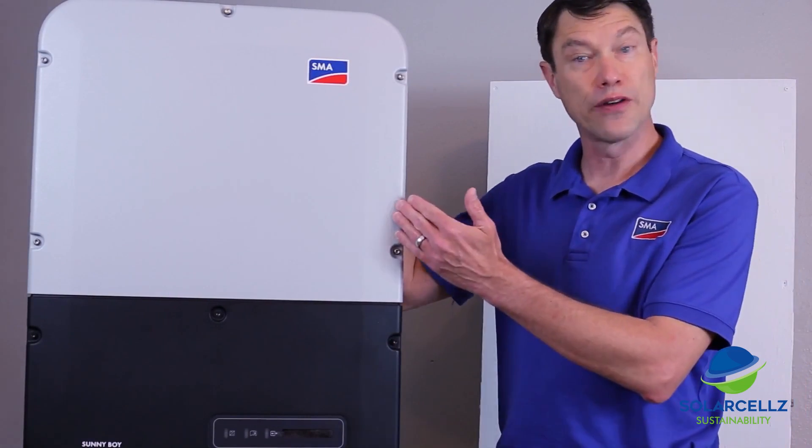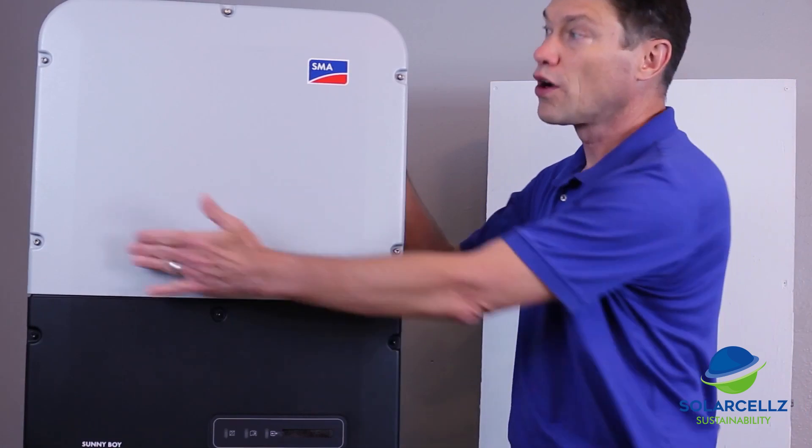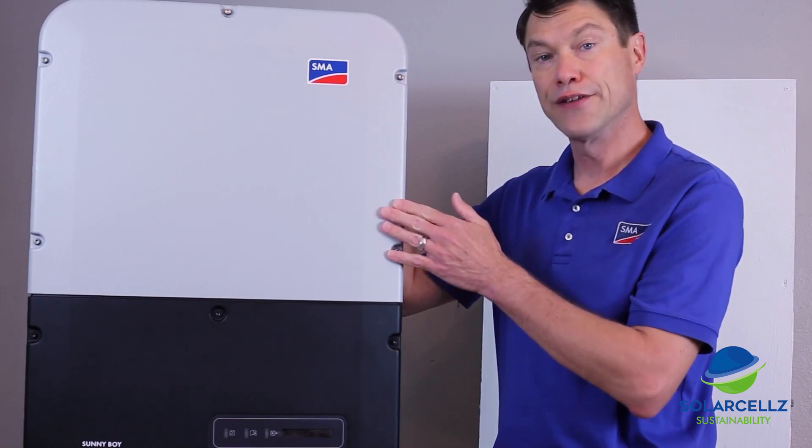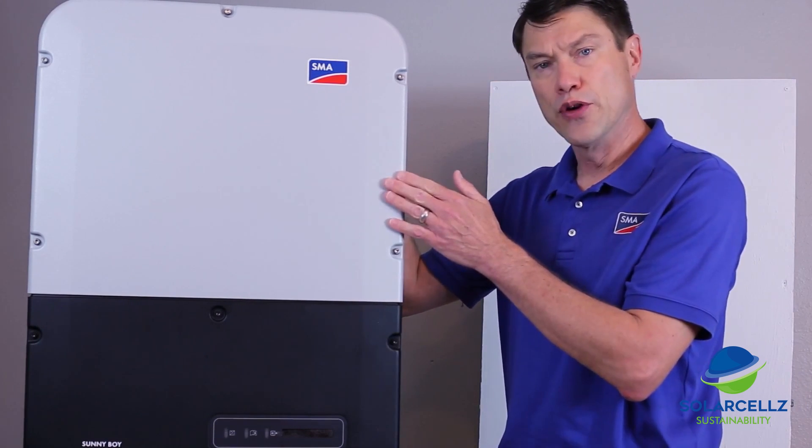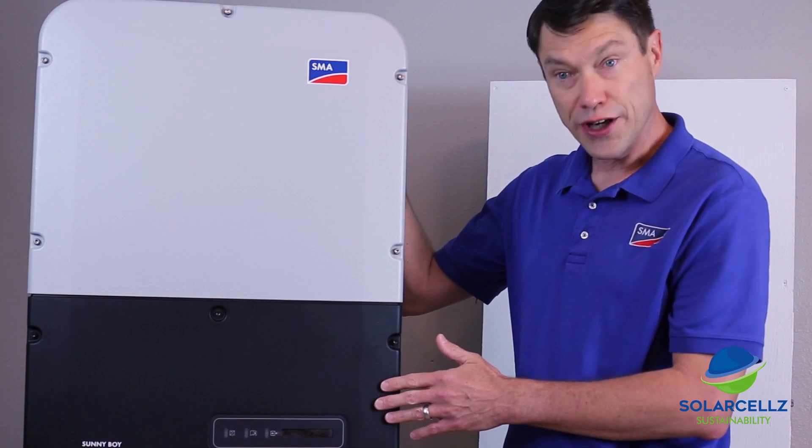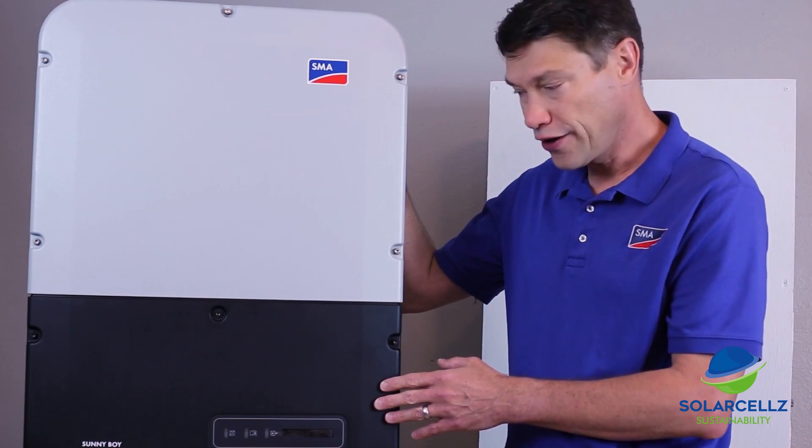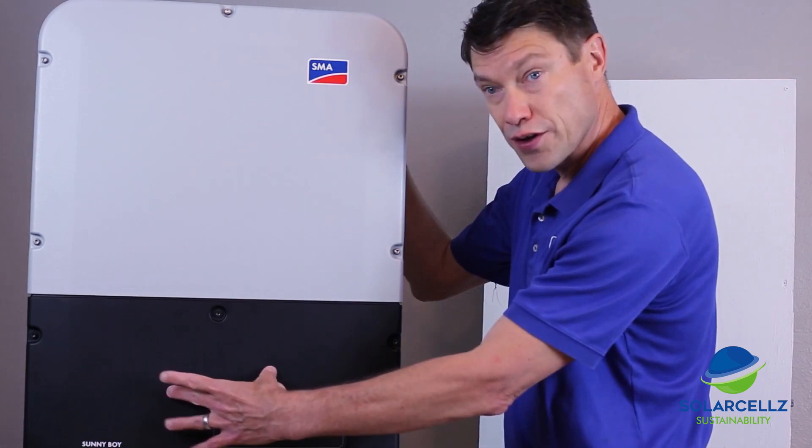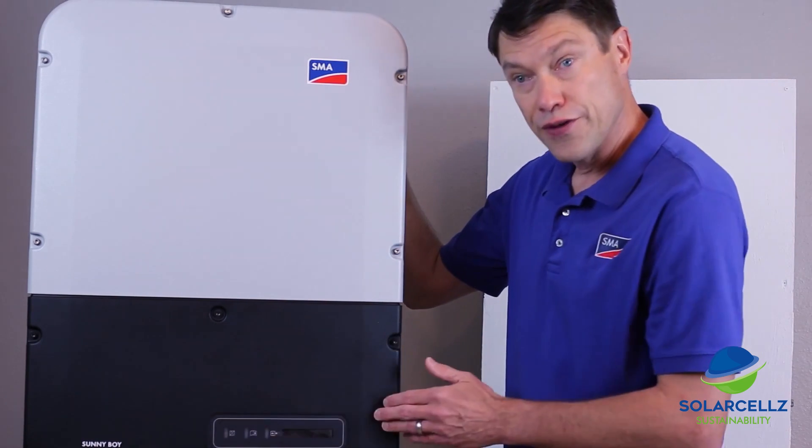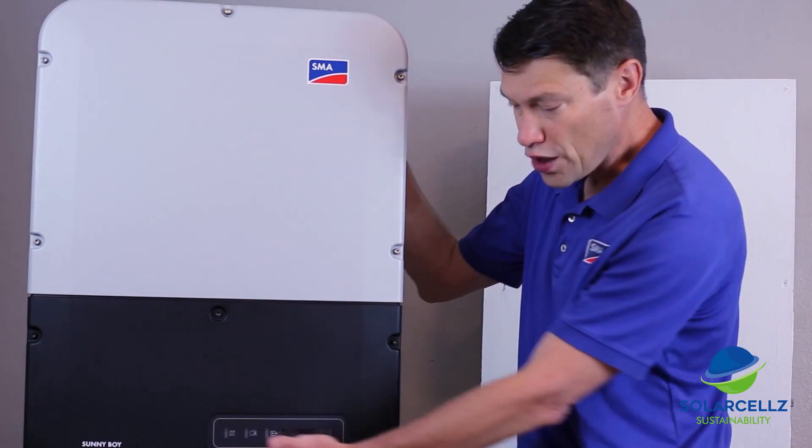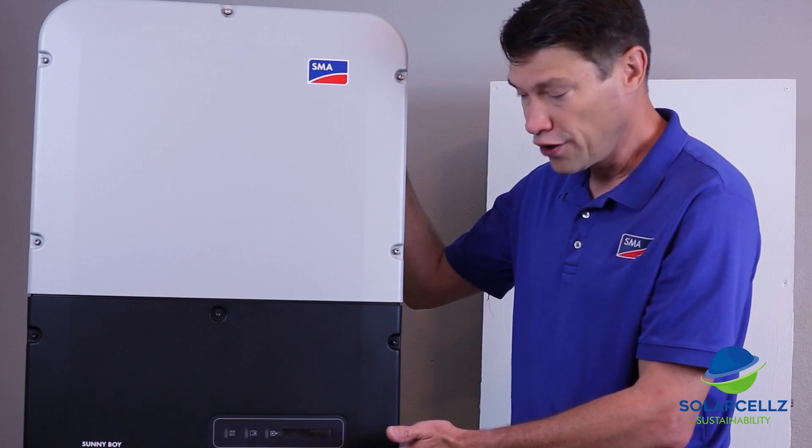The top section is referred to as the power unit, behind this gray lid. This is where all the power conversion electronics resides. This upper lid should never have to be removed in the field. The lower section behind the black lid is called the connection unit area. The communications board is front and center behind this lid. The remainder of the space is wiring area. You also see the display board on the front of the connection unit cover.